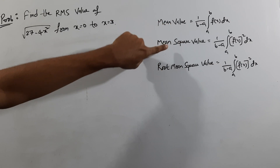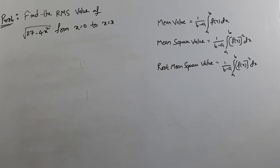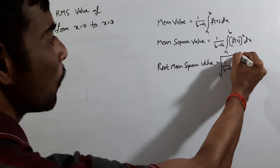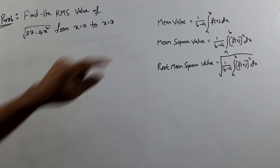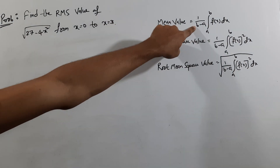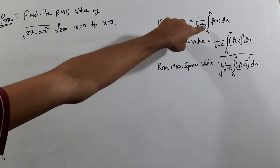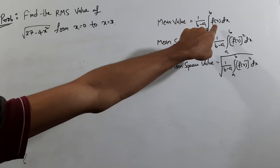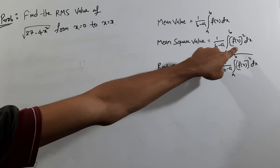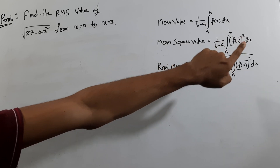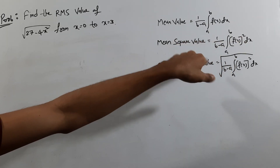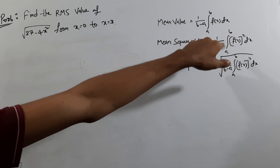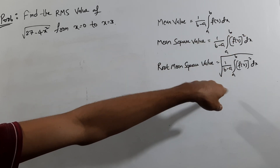So we have three formulas side by side: mean value, mean square value, and root mean square. Mean value is 1 by (b minus a), integration of a to b, f of x into dx. Mean square value — the function f of x is squared. Root mean square value — we add a root outside over the entire mean square expression.